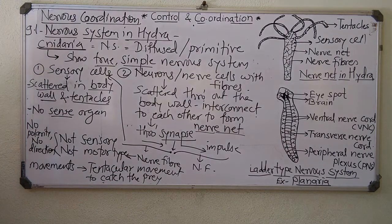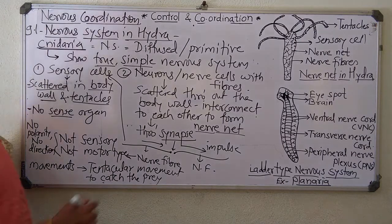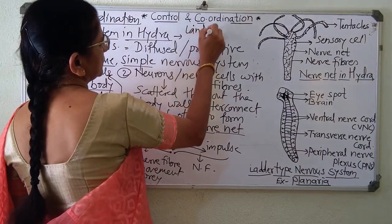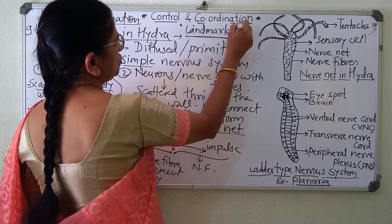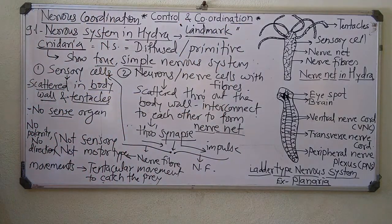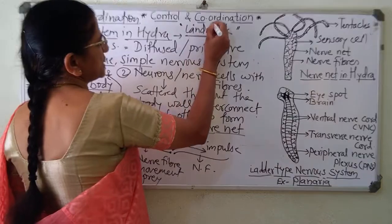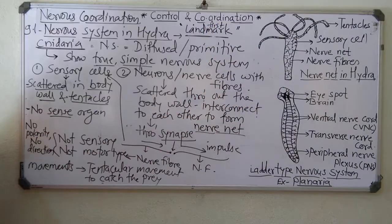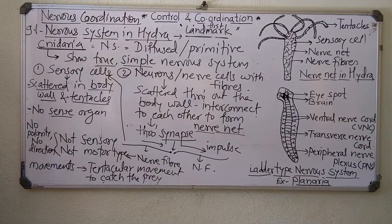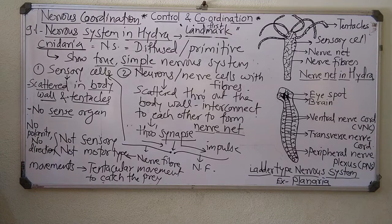The formation of such a nervous system in Hydra is a landmark in the evolution of the nervous system. The primitive or diffused type of nervous system formed in Hydra is the first landmark in the evolution of the nervous system, from which, step by step in the next phylums, the nervous system gets more evolved and becomes more and more complex. In that way, we complete the nervous system in Hydra.